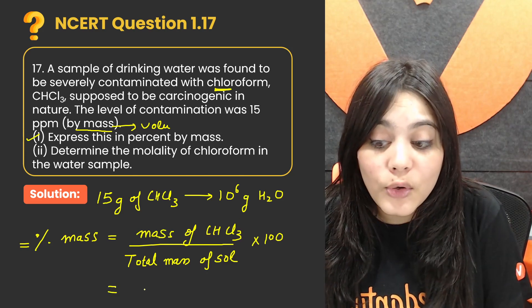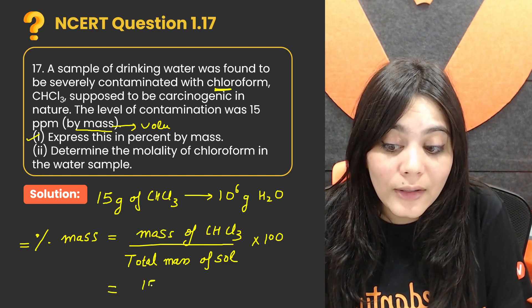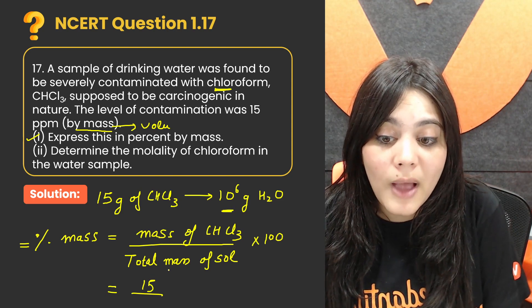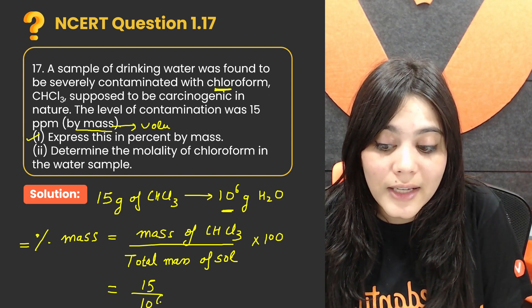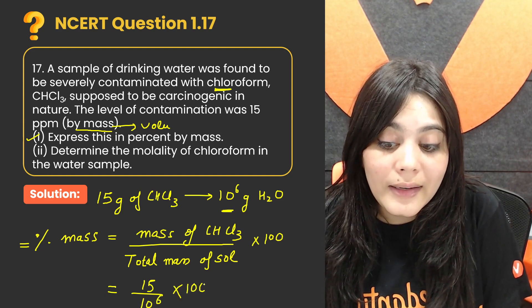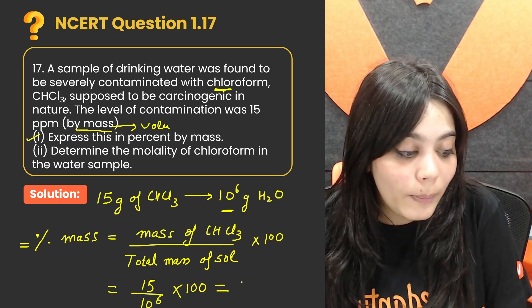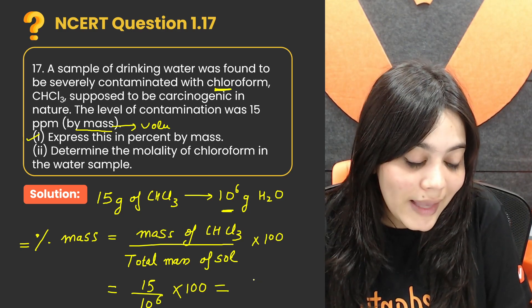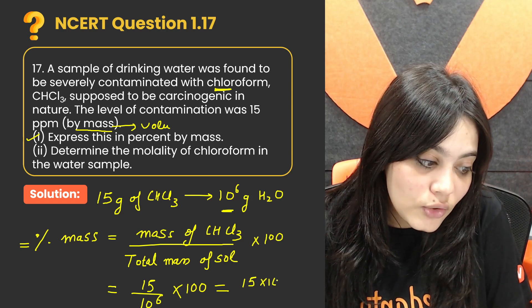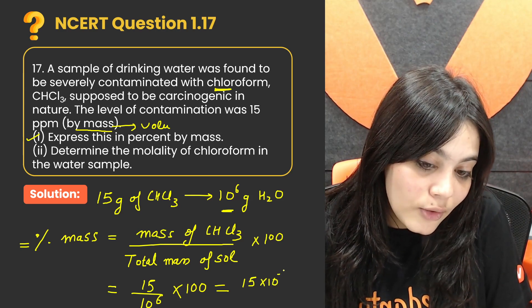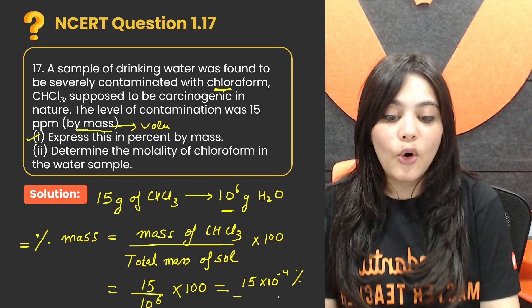How much is the mass of chloroform? 15. Total mass of solution, 10 to the power of 6. So 15 upon 10 to the power of 6 into 100. When I do this, the percentage of mass will be 15 into 10 raised to the power of minus 4 percent.